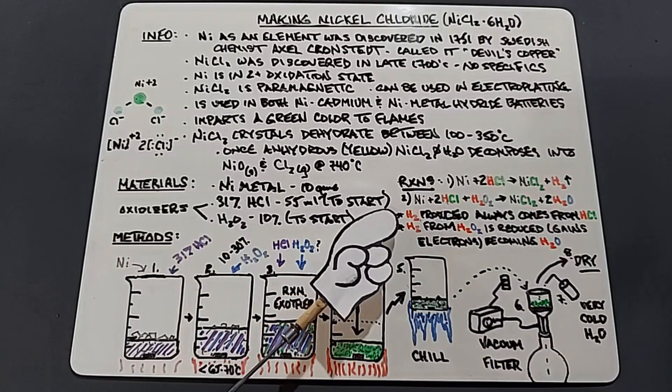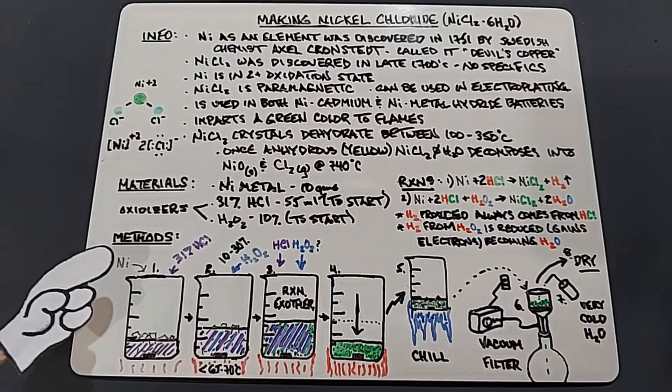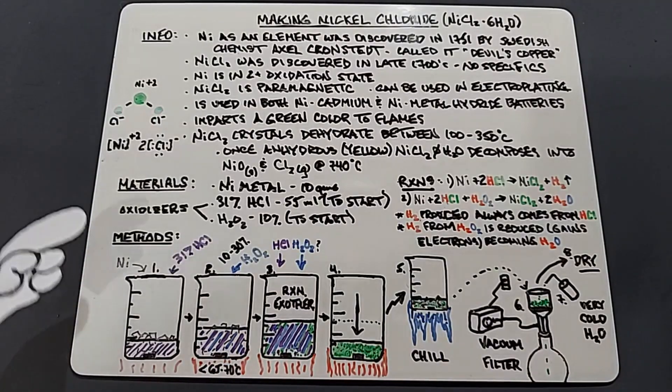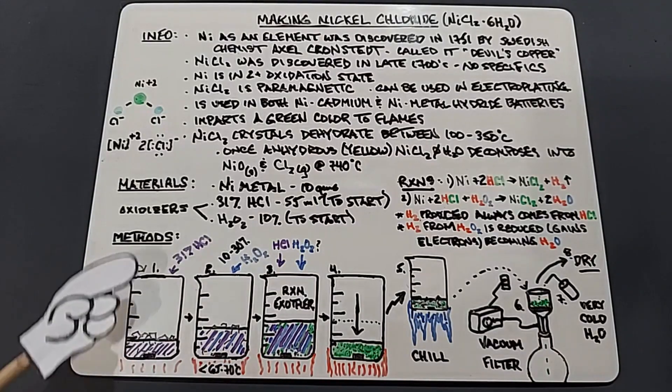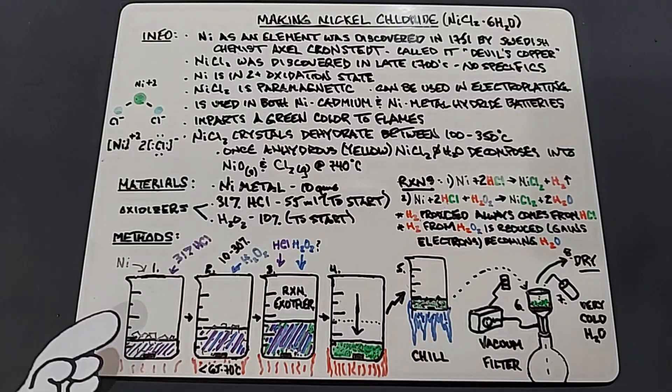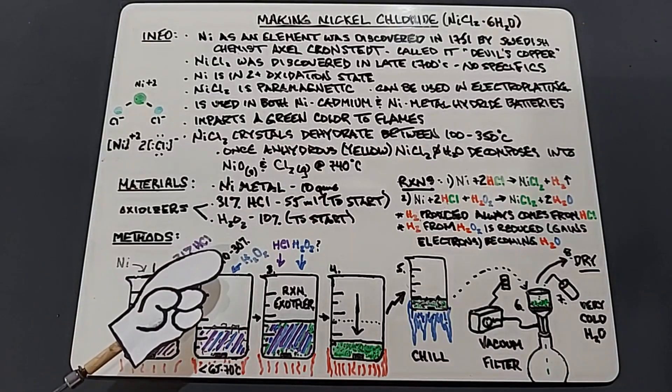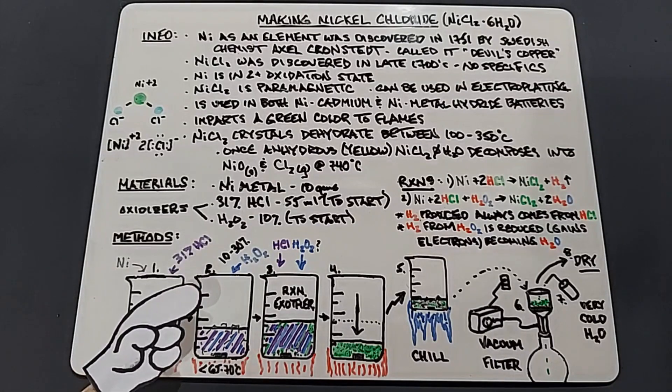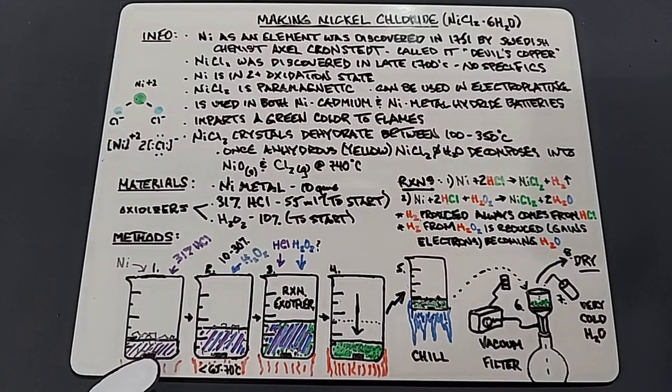In our methods, it's actually pretty straightforward. We have our nickel metal, our strips, we're going to add the 31% hydrochloric acid to start with, 55 milliliters, and then of course adding the hydrogen peroxide will improve our results of breaking down the nickel.